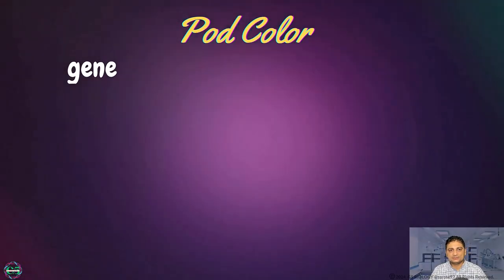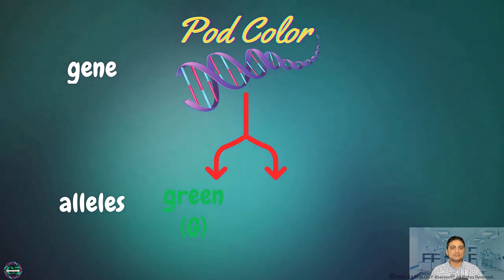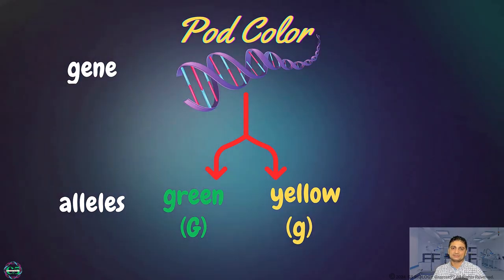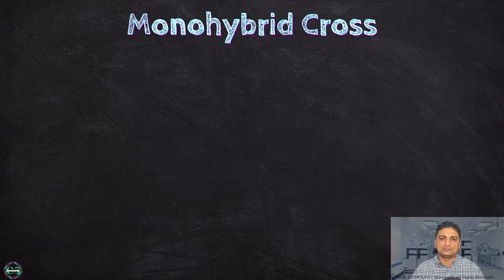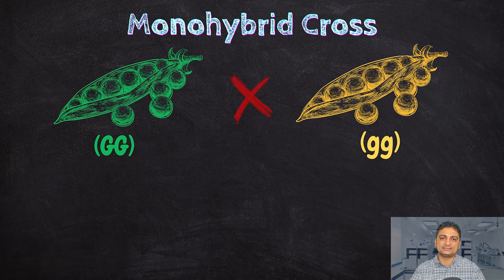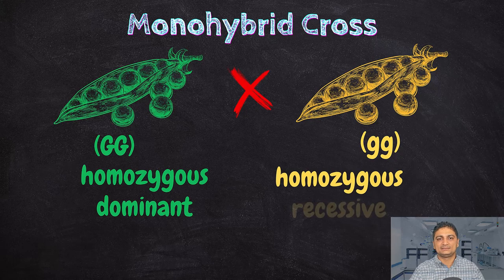Pea pod color is determined by a single gene with two possibilities of alleles. One allele is green, denoted by uppercase G, and another is yellow, denoted by lowercase g. Now let's consider a monohybrid cross between two pea plants which differ in pea pod color. The green pod plant is denoted as uppercase GG and the yellow pod plant as lowercase gg. The green pod plant is homozygous for the green allele, which is the dominant allele, and the yellow pod plant is homozygous for the yellow allele, which is the recessive allele.